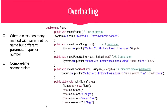In method overloading, the methods have different parameter numbers and types. The parameter number has to be different; otherwise the program won't even compile, because a class doesn't allow more than one method with the same name unless its parameter type or number differs.